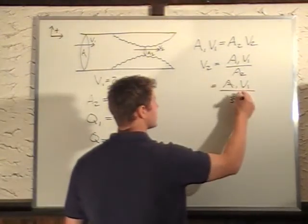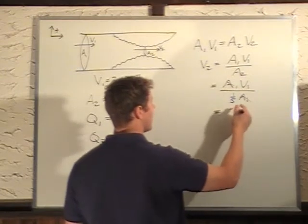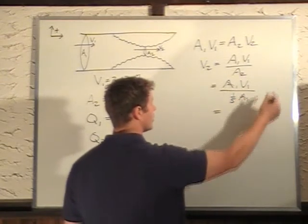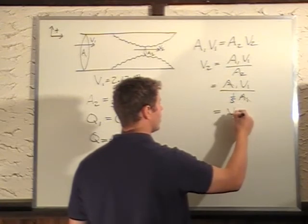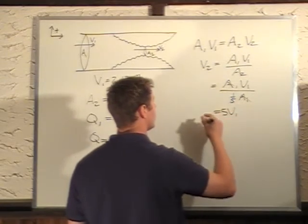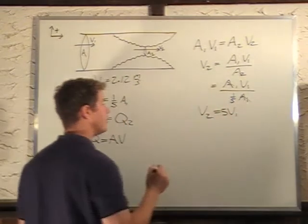So now my A1s cancel, and one-fifth on the bottom becomes 5 on the top. So V2 equals 5V1.